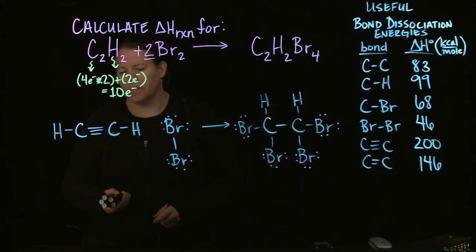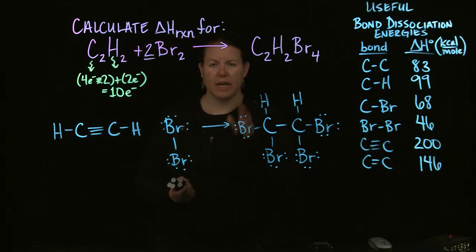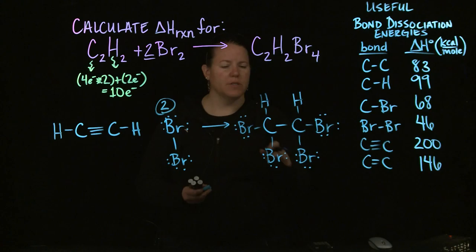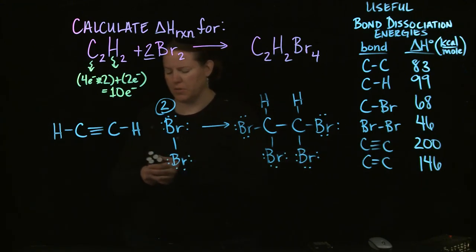Okay, so in terms of this, what I want to do is I want to do a rack and stack of what kinds of bonds I have going on on the reactant side. Remember, I have two of these. And what kinds of bonds are going on on the product side. And then I need to look at my energies and multiply those out.